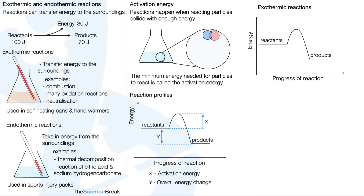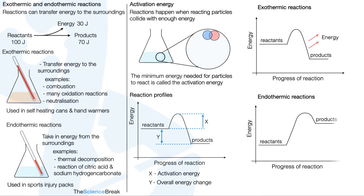For exothermic reactions, energy is transferred to the surroundings, and the products energy line is lower than that of the reactants — that is what the reaction profile looks like for an exothermic reaction. For an endothermic reaction, the products energy line is higher than the energy of the reactants, and in this case energy has been taken in from the surroundings. The activation energy x is shown by that line, and the overall energy change y is shown between the reactants and the products.